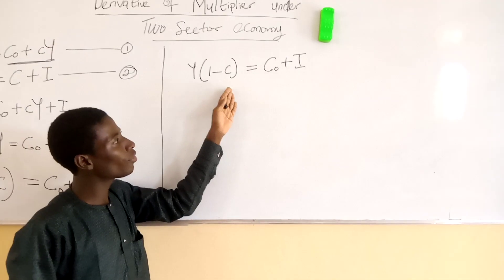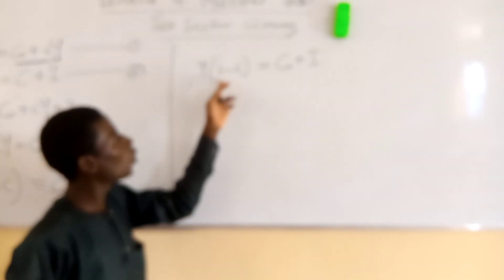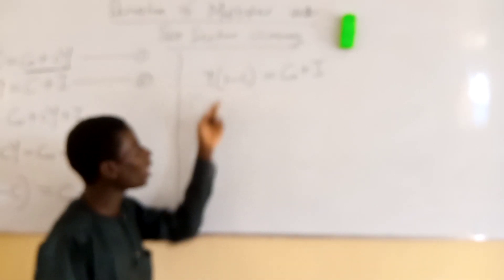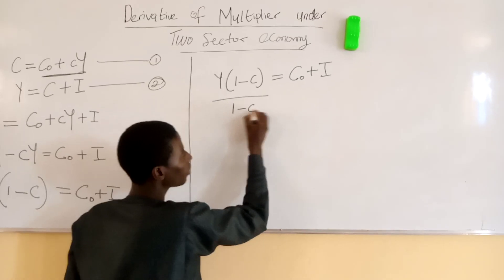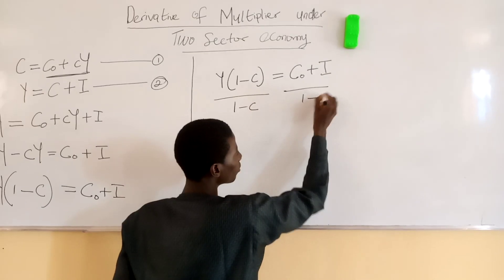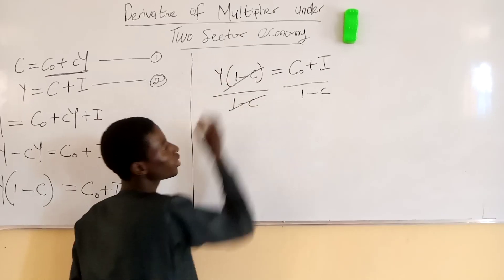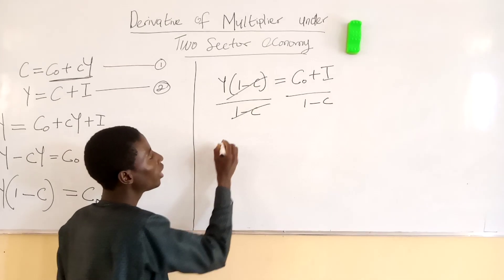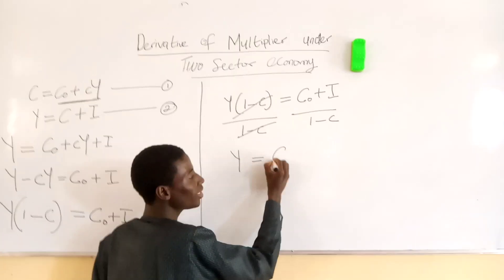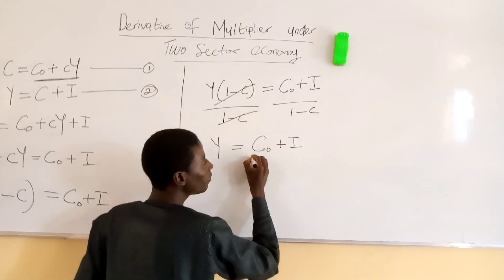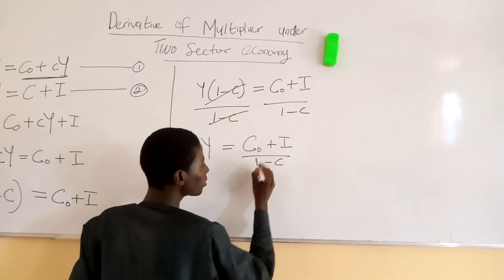How do we derive in a situation whereby we have to get our Y, which is multiplier? We divide both sides by one minus c. We cancel one minus c on both sides, so we now have our Y, the output, equal to C sub zero plus I divided by one minus c.